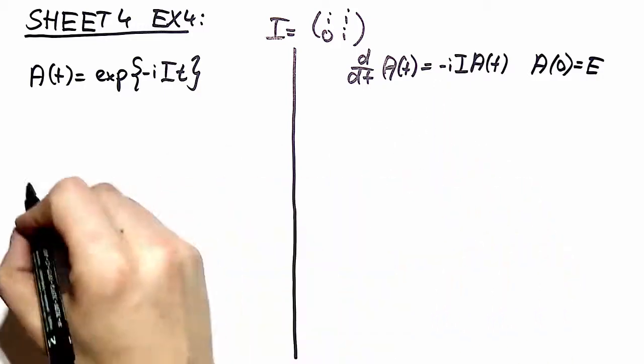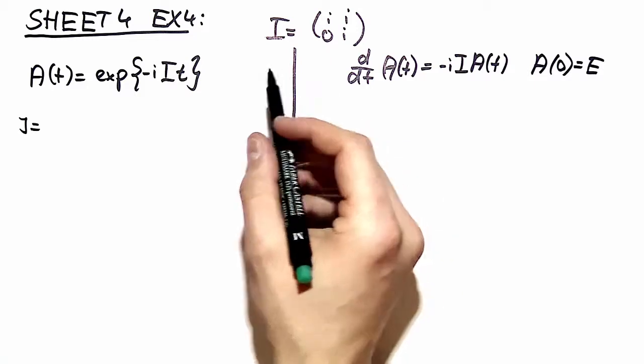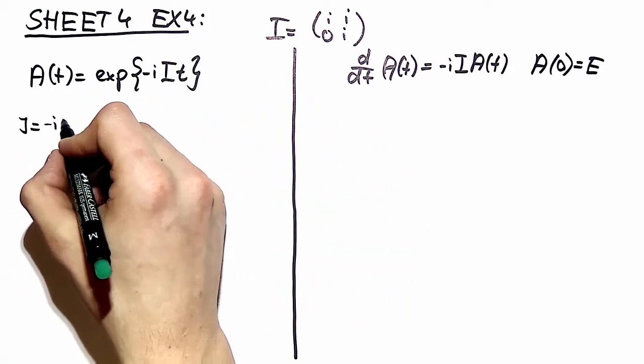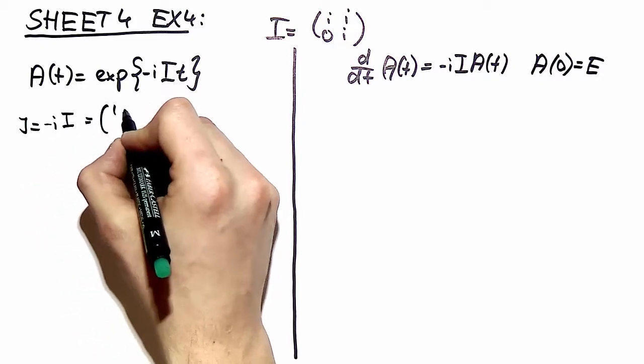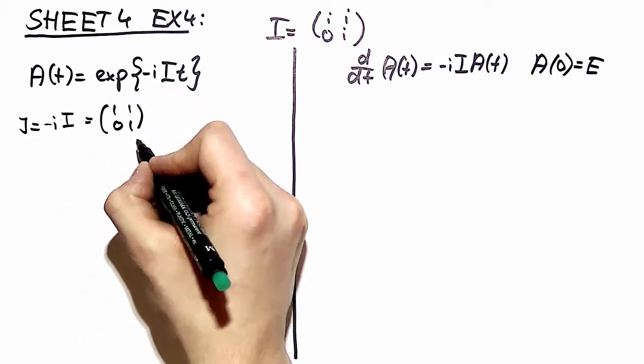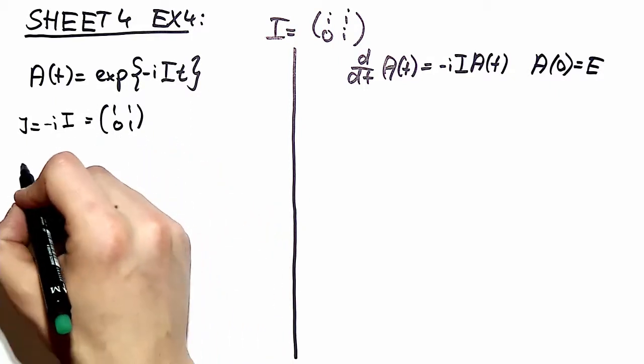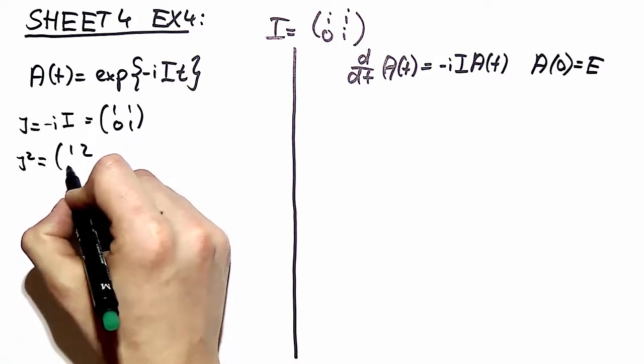Okay first of all we want to spot the powers here. We take a matrix J which is equal to minus i times I, this is (1, 1; 0, 1) and with that we can work because here it's easy to spot. If we calculate some examples for example J squared this is a matrix with ones on the diagonal and two on the upper right matrix element.